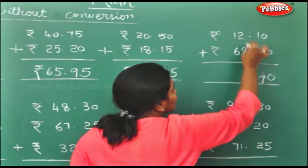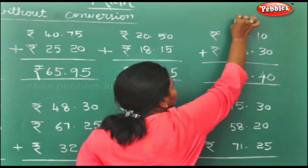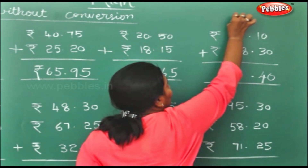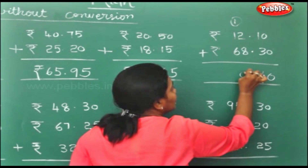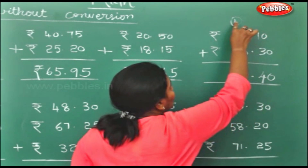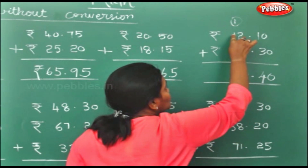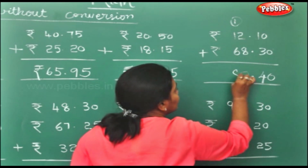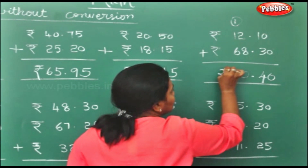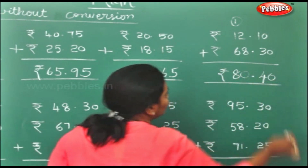2 plus 8 is 10. Carry on the top, 0 here. 1 plus 1 is 2. 2 plus 6 is 8. So rupees 80.